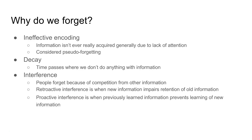Another reason is the decay theory, which holds that after a certain amount of time where we haven't done anything with information we've been given, we forget it — the reason being simply the passage of time. Then there is interference theory, which suggests that people forget because of competition from other information. You're receiving so much information that there's only a finite amount of room, so you have to choose what to remember.